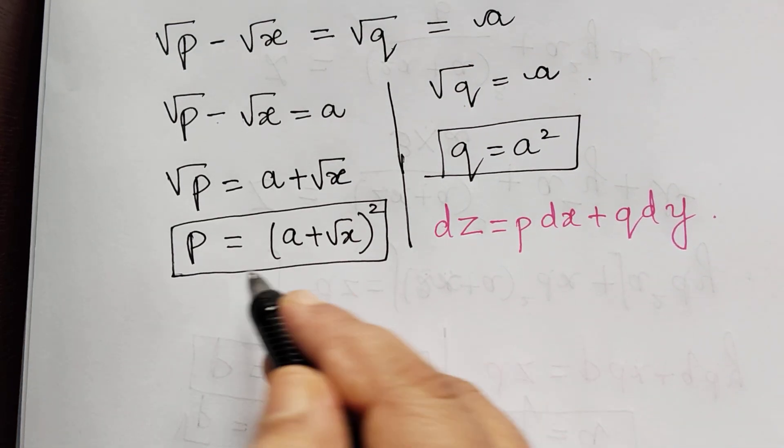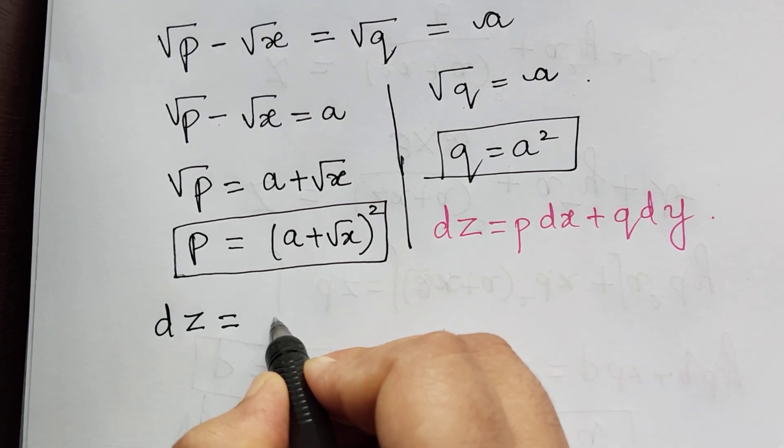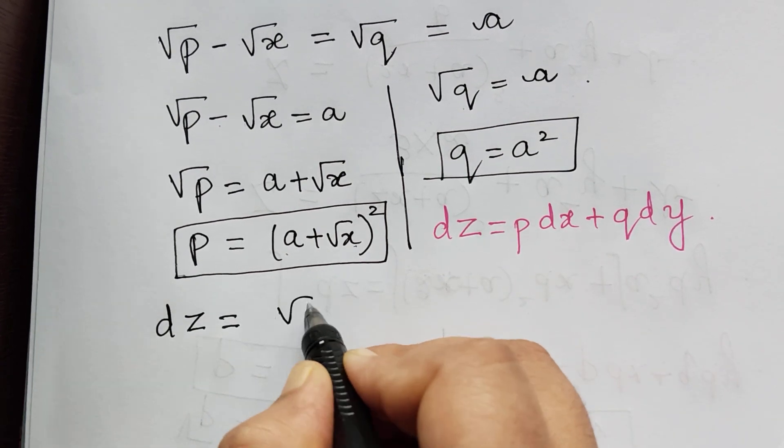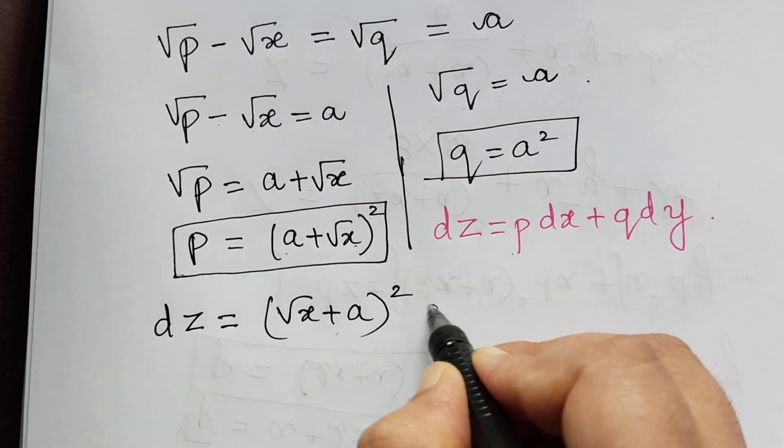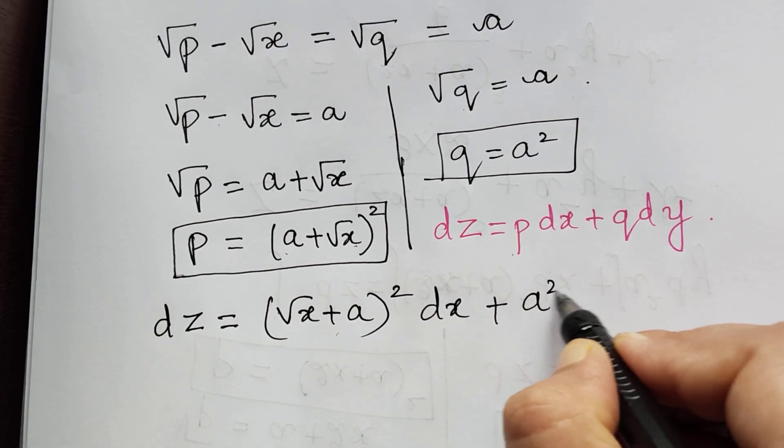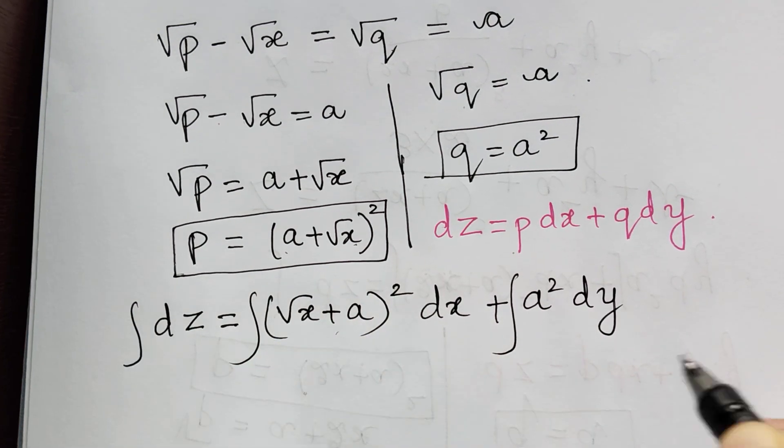So on substituting, what we get is dz equals a plus root x. So I can write it as root x plus a, the whole square. So p dx plus q is a squared dy. Now we have to integrate on both the sides.